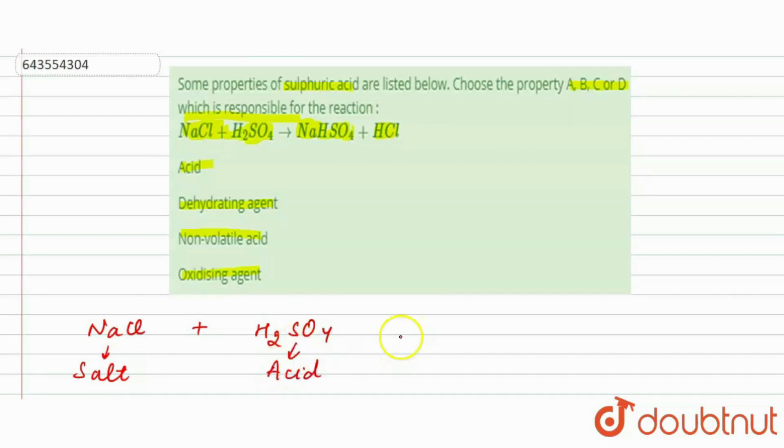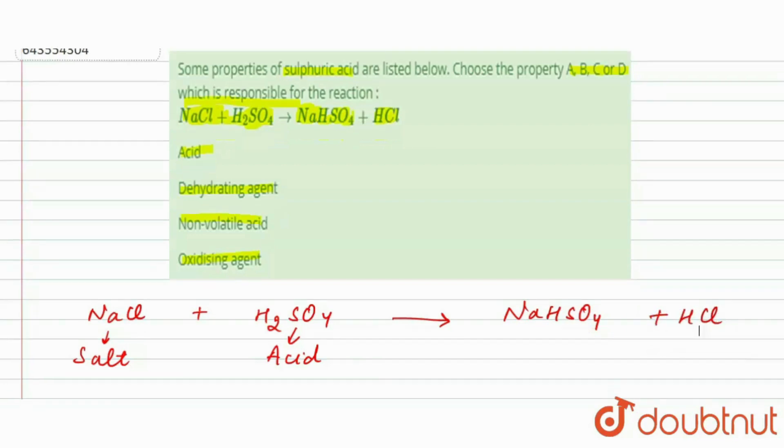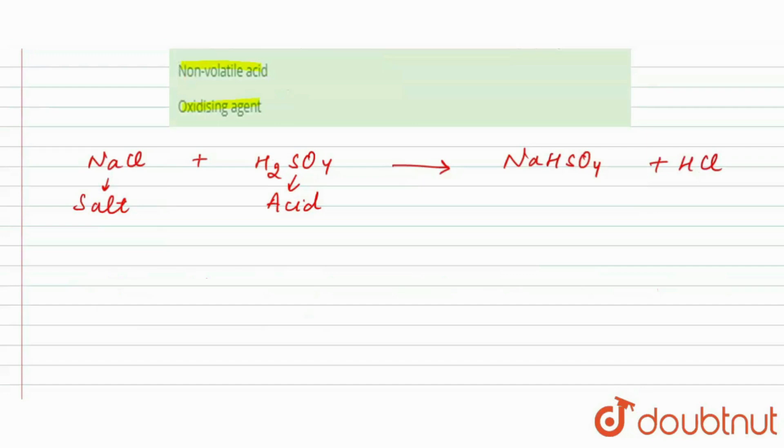It is a salt plus H2SO4, an acid. And here we have NaHSO4 plus HCl. First let's see here: HCl is also acid, and this is also salt.